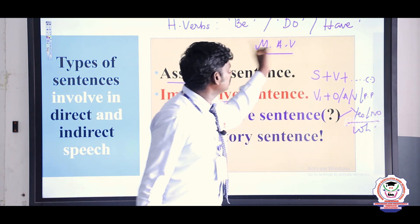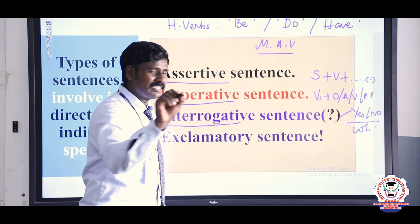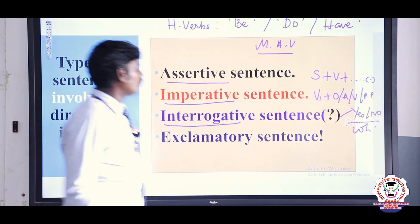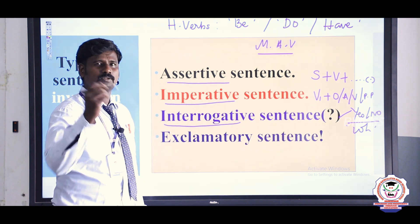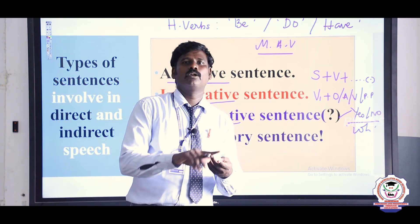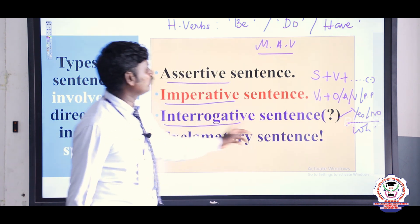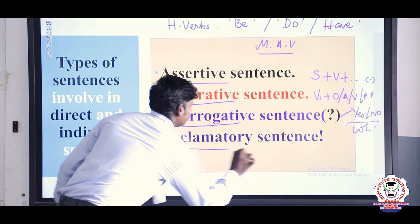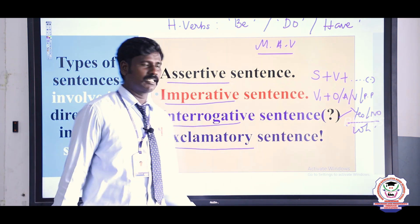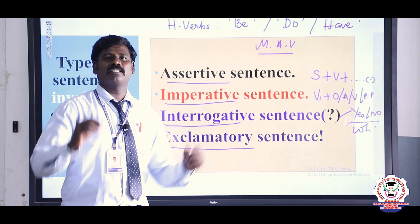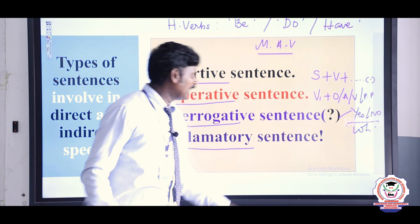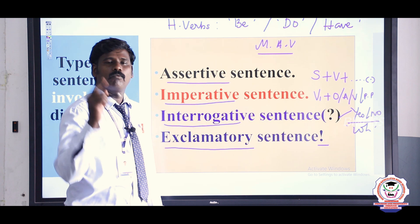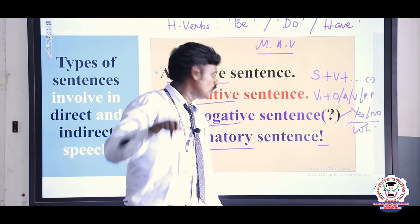WH type questions begin using WH words like when, where, why, who, whom, whose, and so on. Interrogative sentences end with a question mark. Exclamatory sentence is used to express sudden feelings and emotions. These sentences end with an exclamatory mark and will have one of the exclamatory words like 'wow,' 'hooray,' 'alas,' or 'bravo.'